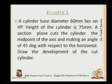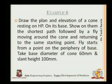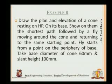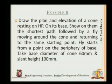Let's move on to the final problem for today - we have a birthday cap which will explain this problem. Problem 6: draw the plan and elevation of a cone resting on the HP on its base. Show on them the shortest path followed by a fly moving around the cone and returning to the same position. The fly starts from a point on the periphery of the base. Base diameter is 60mm and slant height is 100mm.